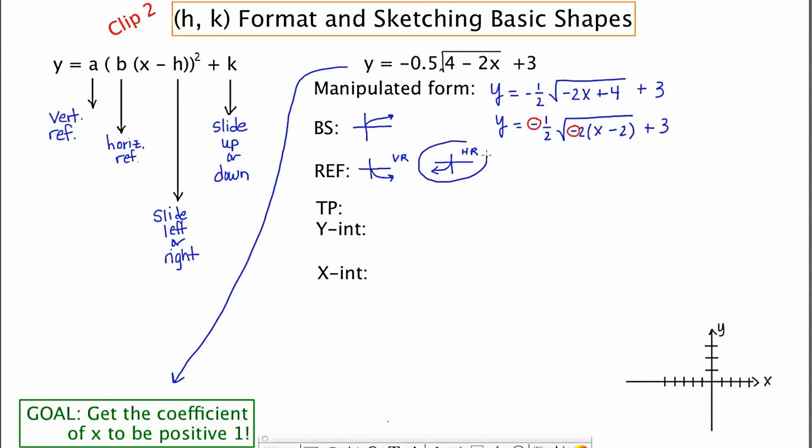Now, the translation point is sort of the net result after you've done your slides. This graph is going to go two to the right and three up. So I'm going to write down 2, 3. Remember that it's opposite in the inside. So we see a negative two, but it's really plus two. And then on the outside, it is what you see. So plus three.